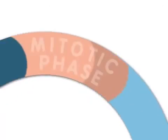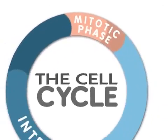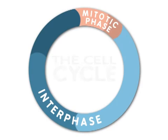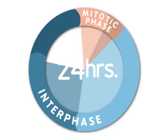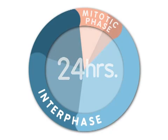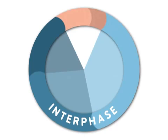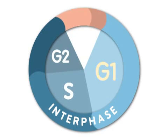Mitosis is only one part of what is called the cell cycle. For many eukaryotic cells, a cell is duplicated every 24 hours. Most of the life of a cell is spent in interphase. Interphase consists of three stages called G1, S, and G2.